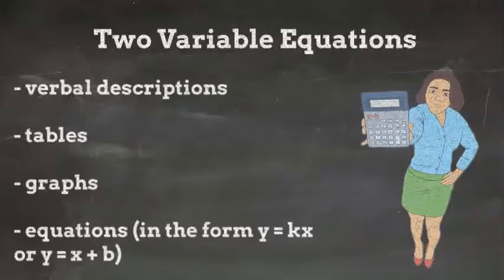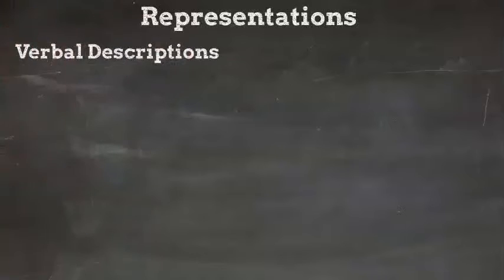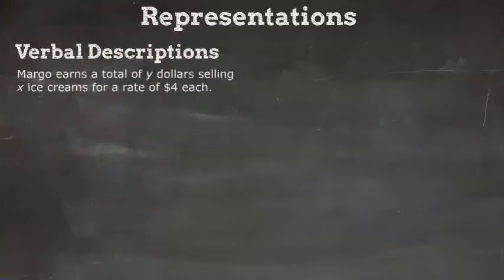Let's look at an example. First, let's take a verbal description. Margo earns a total of y dollars selling x ice creams for a rate of $4 each. X and y are the variables. Y is the number of dollars she earned, and x is the number of ice creams she sold.